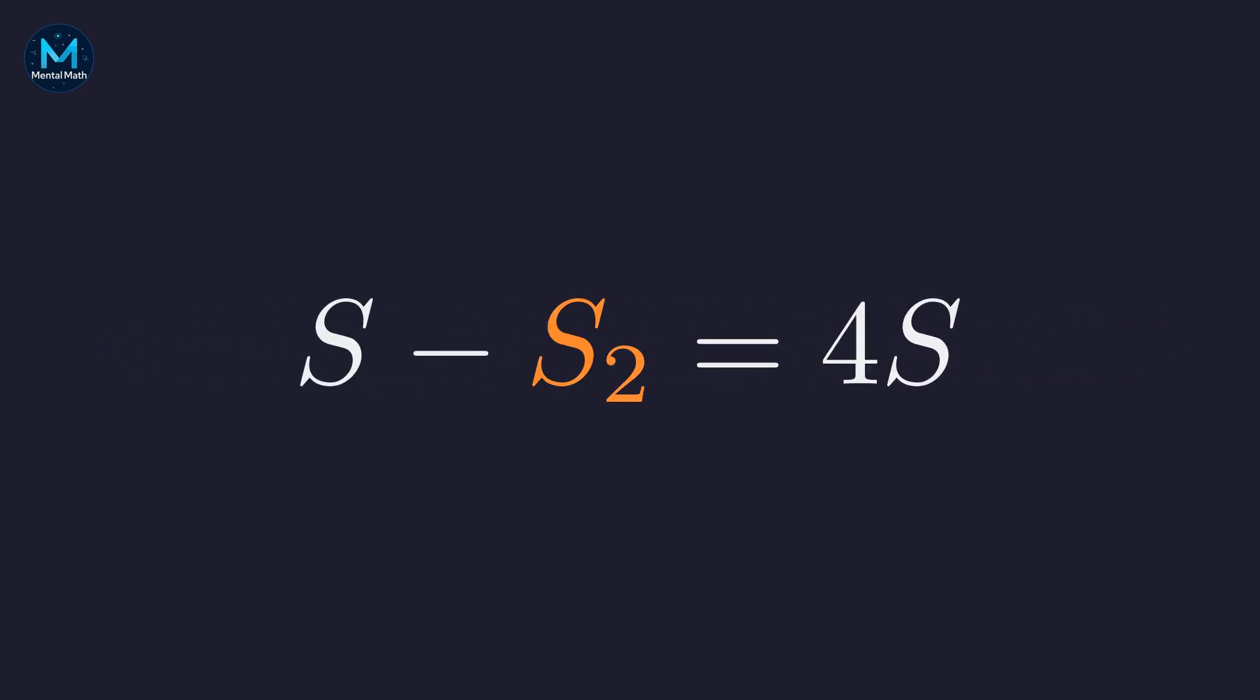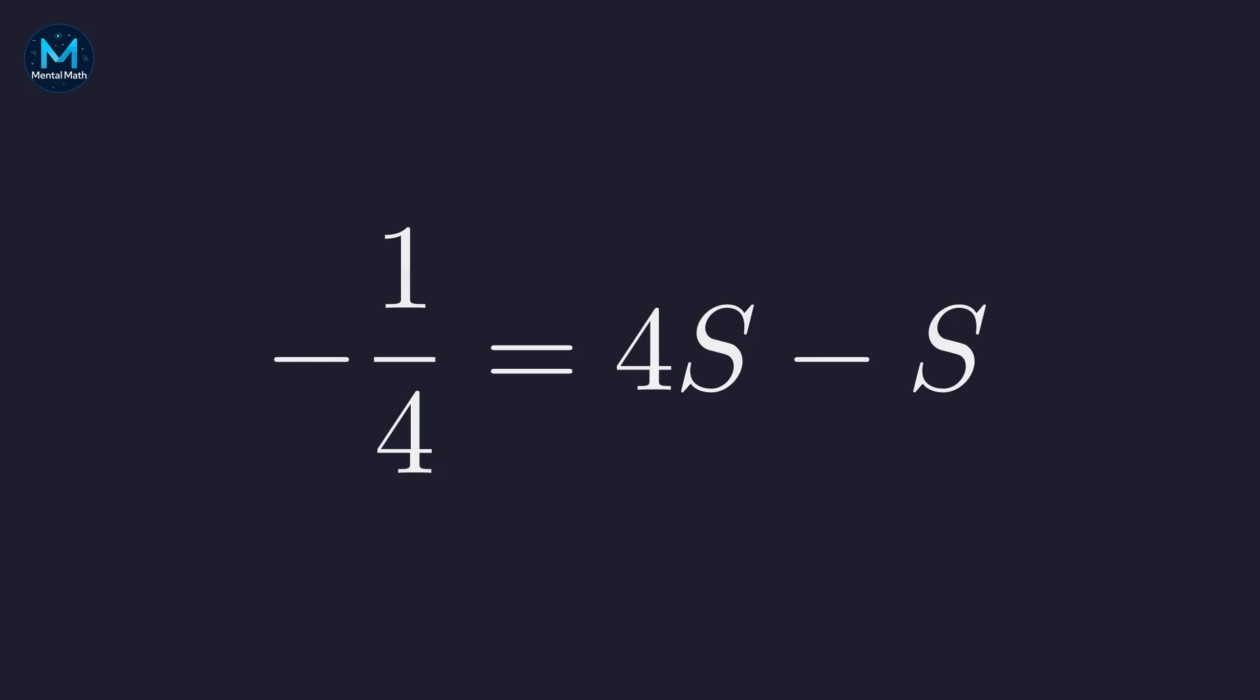We can now substitute the value we found for S sub 2, which was 1 fourth. This gives us S minus 1 fourth equals 4S. To solve for S, we must gather the S terms. Let's subtract S from both sides. This leaves negative 1 fourth on the left and 4S minus S on the right. Simplifying the right side, we get negative 1 fourth equals 3S. Our final step is to divide by 3. And there it is. The formal manipulation leads to the result that S, the sum of all positive integers, is assigned the value of negative 1 twelfth.